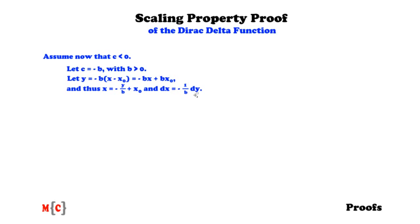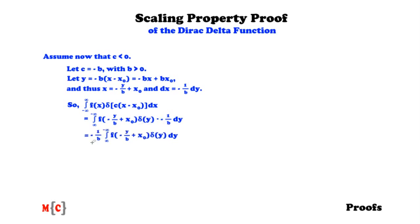Now consider the same integral: the integral from minus infinity to infinity of f(x) times delta(c times x minus x-null) dx. This equals the integral from infinity to minus infinity of f(minus y/b + x-null) times delta(y) times minus 1 over b dy. Notice that the integration domain has flipped, because we introduced a minus sign when switching from x to y. We can factor out the constant 1 over b and the minus sign.